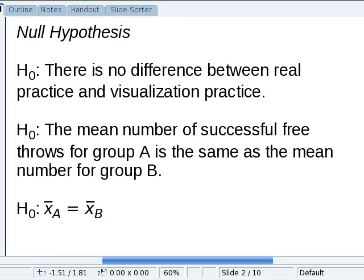Our null hypothesis is again that there is no difference between the real practice and the visualization practice. Another way of saying it is that the mean number of successful free throws for group A is the same as the mean number for group B. And in math talk, that's x̄_A equals x̄_B.